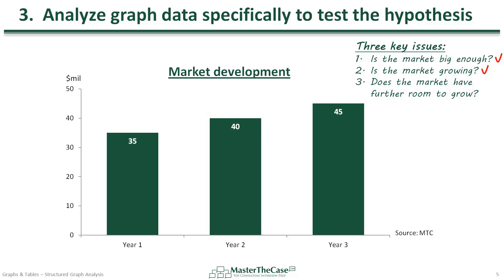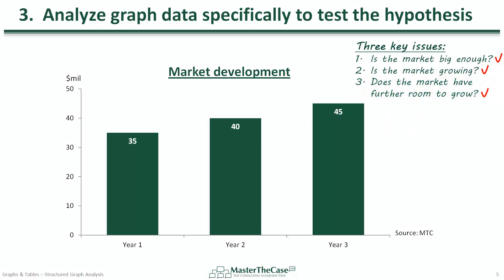Let's now analyze the final key issue: does the market have further room to grow? Unfortunately, the graph does not provide a future market growth projection. So we can either inquire if the current growth trajectory is forecast to continue, or ask what the current market penetration is. Let's suppose that it turns out to be only 5% versus a much higher 50% in other geographies. Such a low level of penetration signals substantial further growth potential, which positively answers our final key issue.